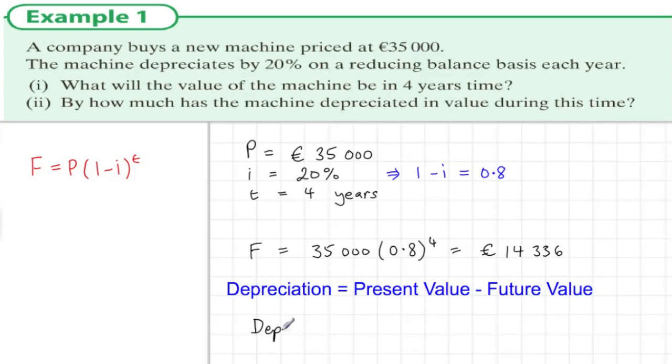The depreciation equals present value minus future value. So the amount by which it has devalued would be 35,000 minus 14,336, and this is the depreciation of €20,664.